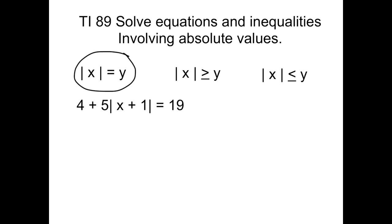First thing you want to do is isolate the absolute value on one side of the equation. So we'll subtract 4 from both sides. That's going to give us 5 times the absolute value of x plus 1 equals 15. Now we'll divide both sides by 5.